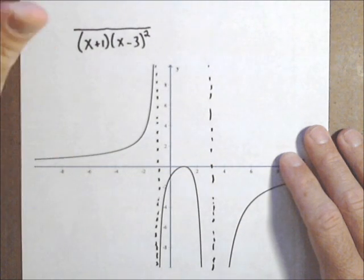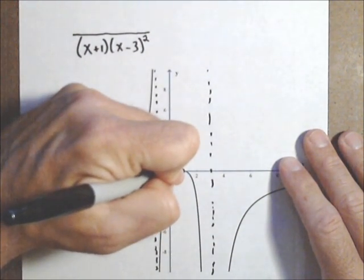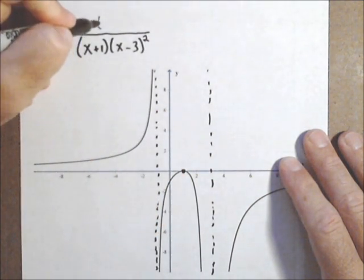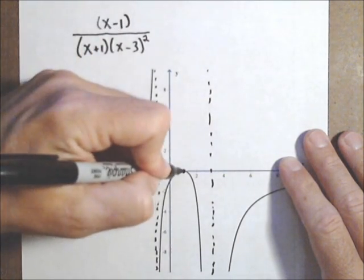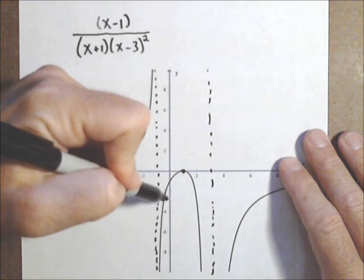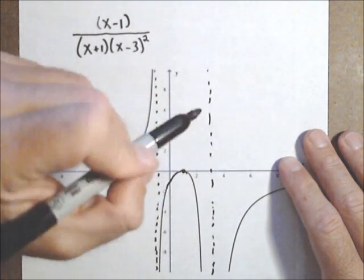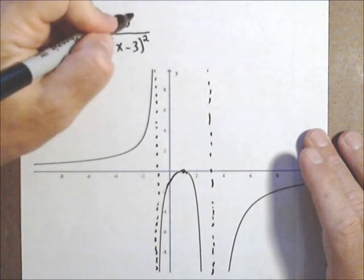Now the numerator is going to come from any x-intercepts. We have one, looks like it's at one, so x minus one will be a factor in the numerator, because that'll create that zero. Again, we want to check for multiplicities. Notice it goes up, hits the x-axis, and bounces off. That means an even multiplicity, so at least squared.